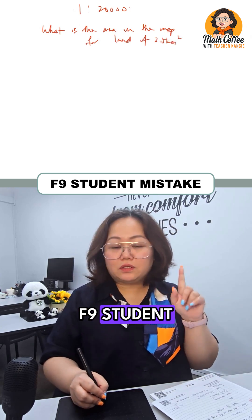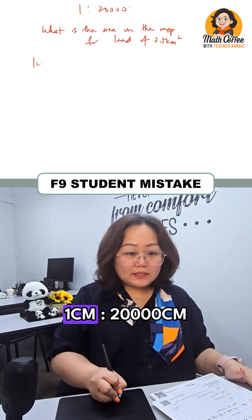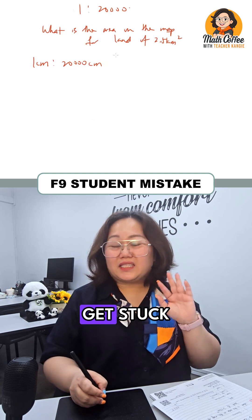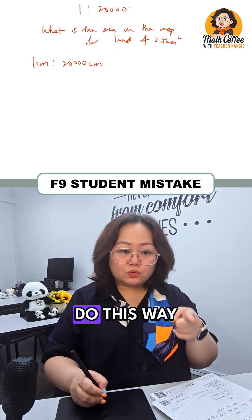This is a F9 student common mistake. So 1 cm is to 20,000 cm. They either get stuck, they don't know what to do, or they will do this way.